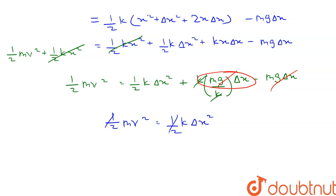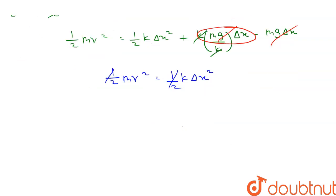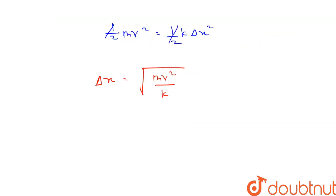So we get the value of delta x equals m times v squared by k whole root. Therefore delta x equals v times square root of m by k.